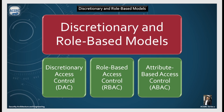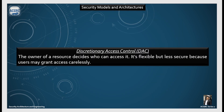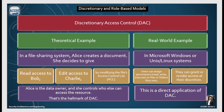There are three models: Discretionary Access Control (DAC), Role-Based Access Control (RBAC), and Attribute-Based Access Control (ABAC). In DAC, the owner of a resource decides who can access it. It's flexible but less secure because users may grant access carelessly. For example, in a file sharing system, Alice creates a document and gives read access to Bob and edit access to Charlie by modifying the file's access control list. Alice is the data owner and she controls who can access the resource — that's the hallmark of DAC.